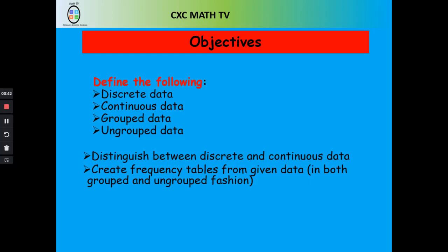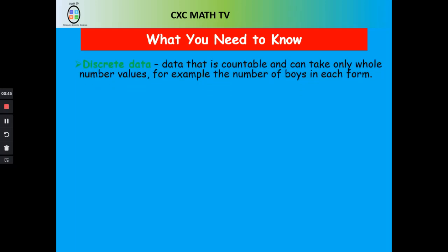First, we need to know what discrete data is. Discrete means countable — it is data that takes finite or whole number values. For example, the number of boys in a class, the number of girls in a class, or the number of persons in the tax office line throughout the week Monday to Friday. Those are discrete data.